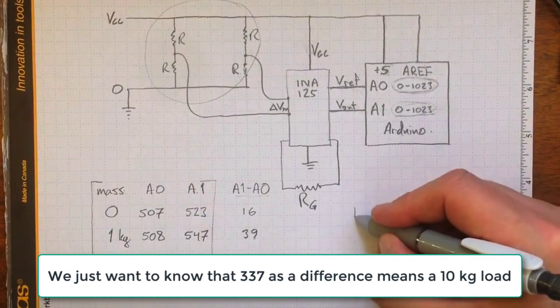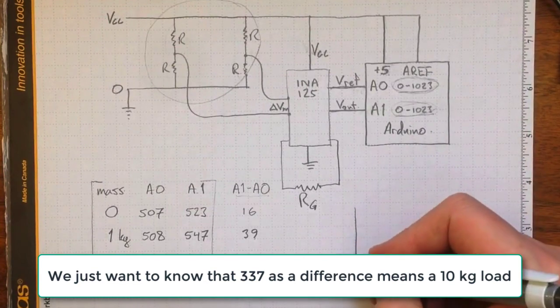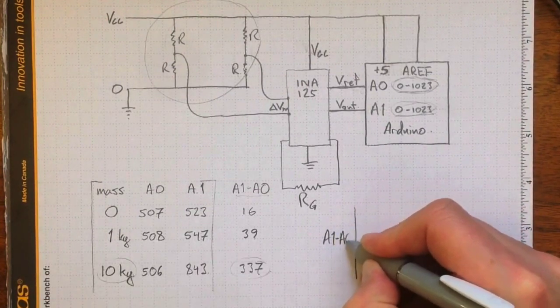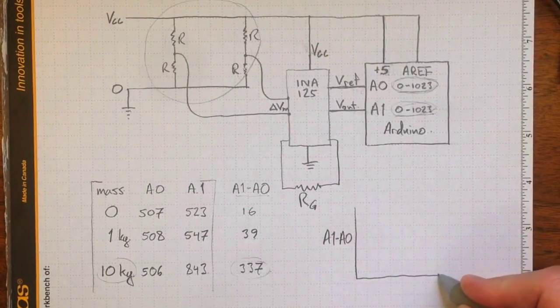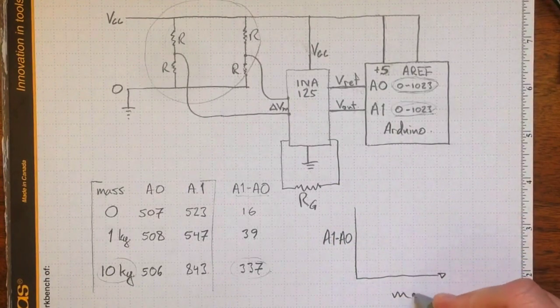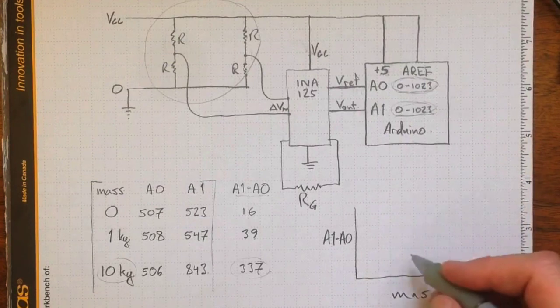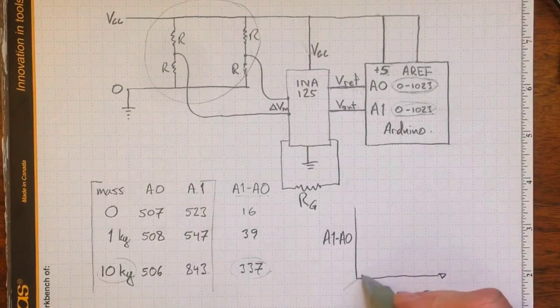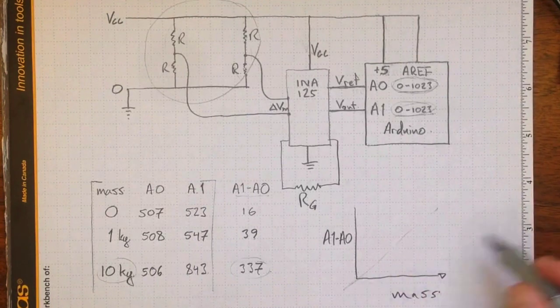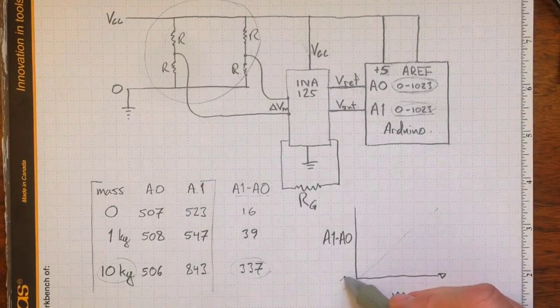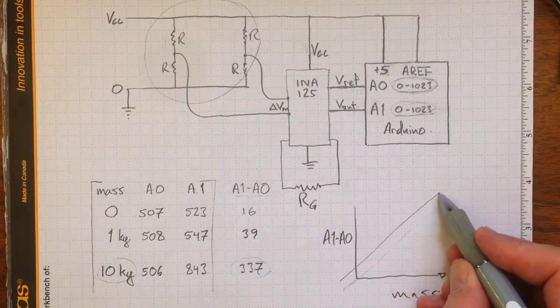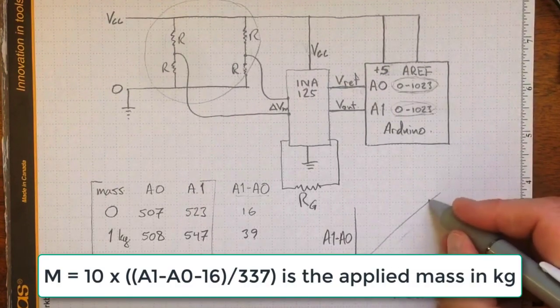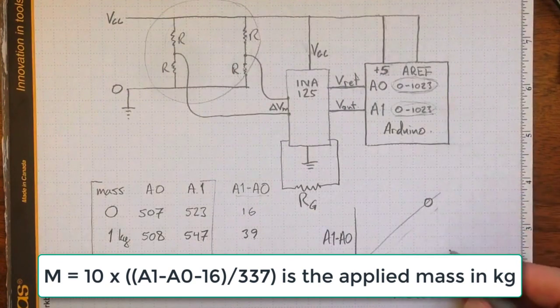If I draw a graph of A1 minus A0 versus the applied mass, I expect that I'm going to see not quite a perfect line straight through the origin, but there may be some offset value. I still expect that I'm going to see a straight line so that there's my 1 kilogram value and there's my 10 kilogram value.